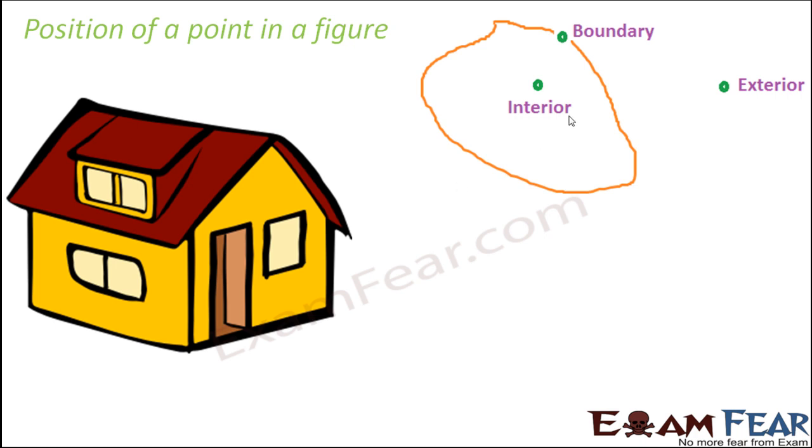So if the point is present inside, it is said to be interior. If it is present outside, it is said to be exterior. And if it is present on the curve, then it is called boundary. So when the boy was outside, he was exterior to the house. When the boy is inside, he is interior to the house. And when the boy was standing at the door, he was at the boundary.